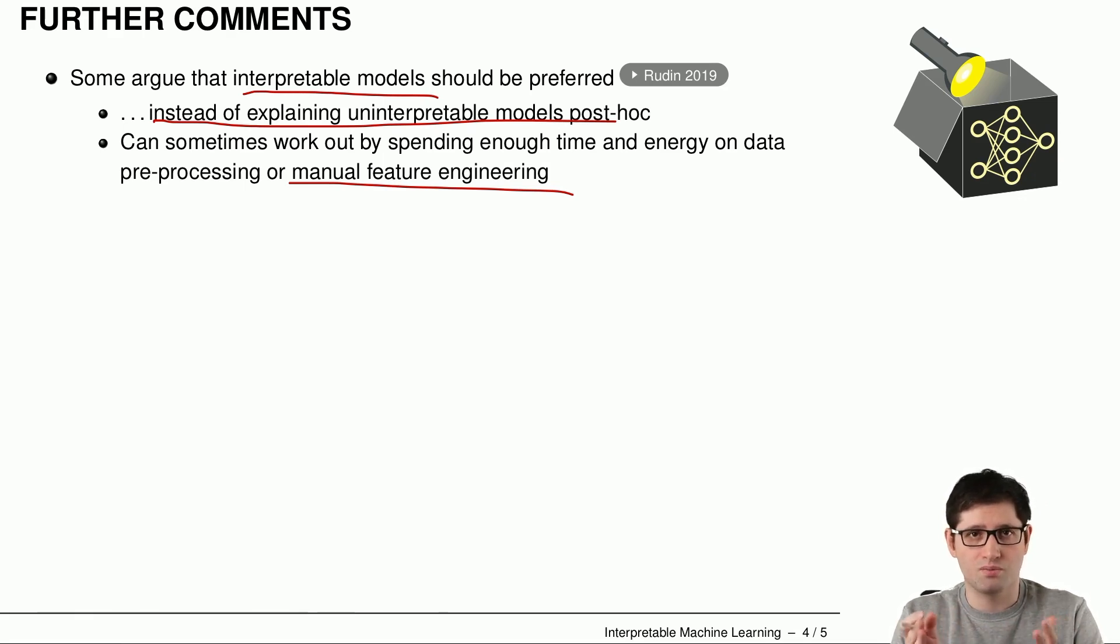For example, like interactions can be seen as a product of two original features. And by making this feature engineering here, you allow the interpretable model to be more flexible because if you, for example, take the square root or if you multiply a feature with another feature, you basically have a non-linear effect of that feature and an interaction of that feature that you are introducing. Like I said, it can sometimes work out in the sense that you can still get a good performance with it, but you need to spend enough time and energy on things like data processing, manual feature engineering and so on.